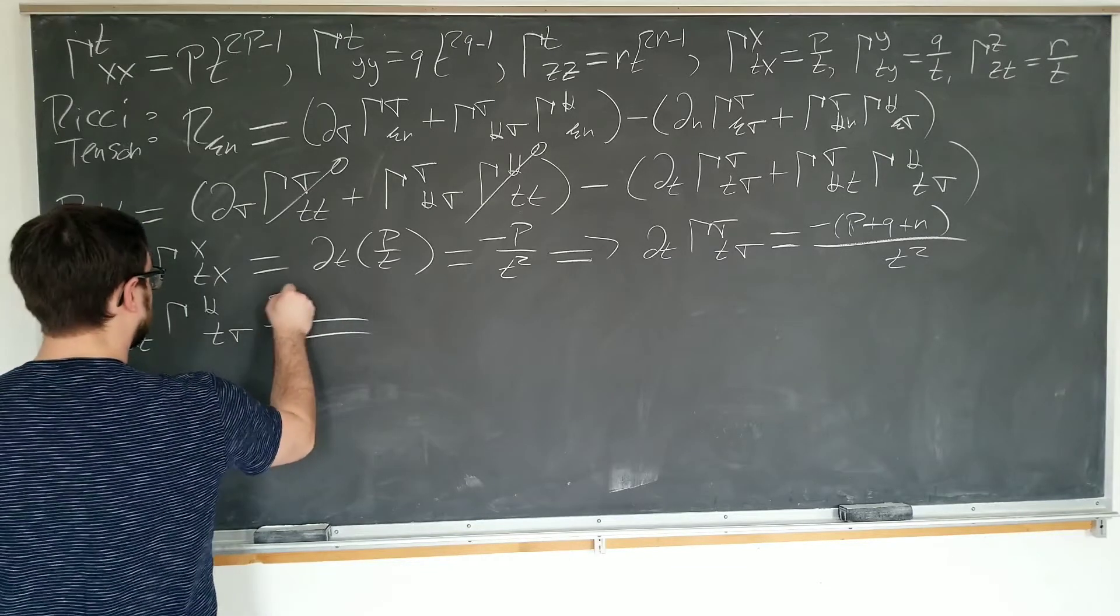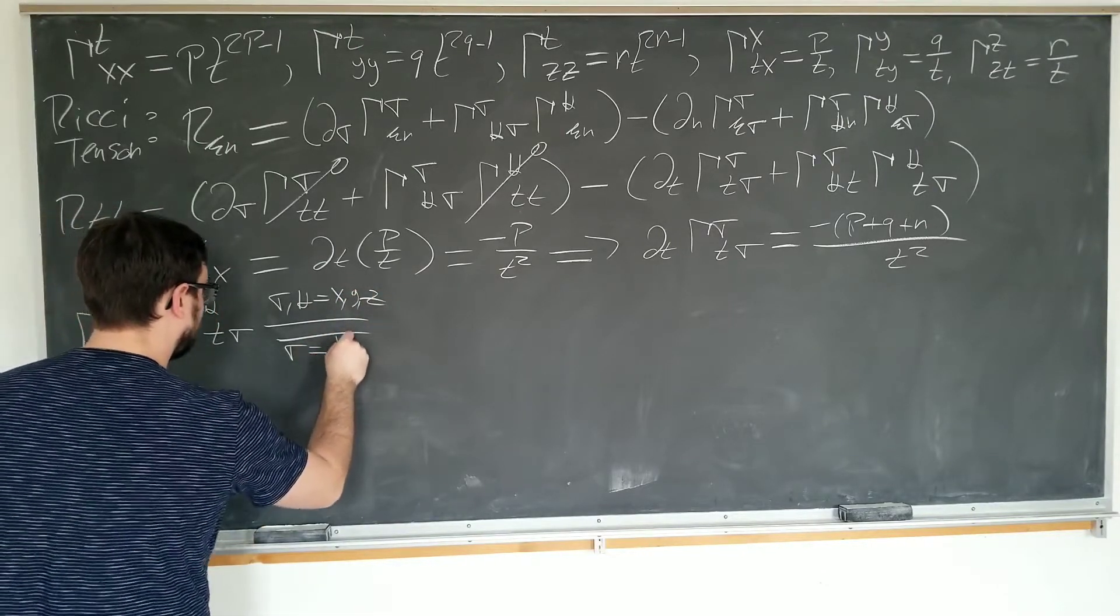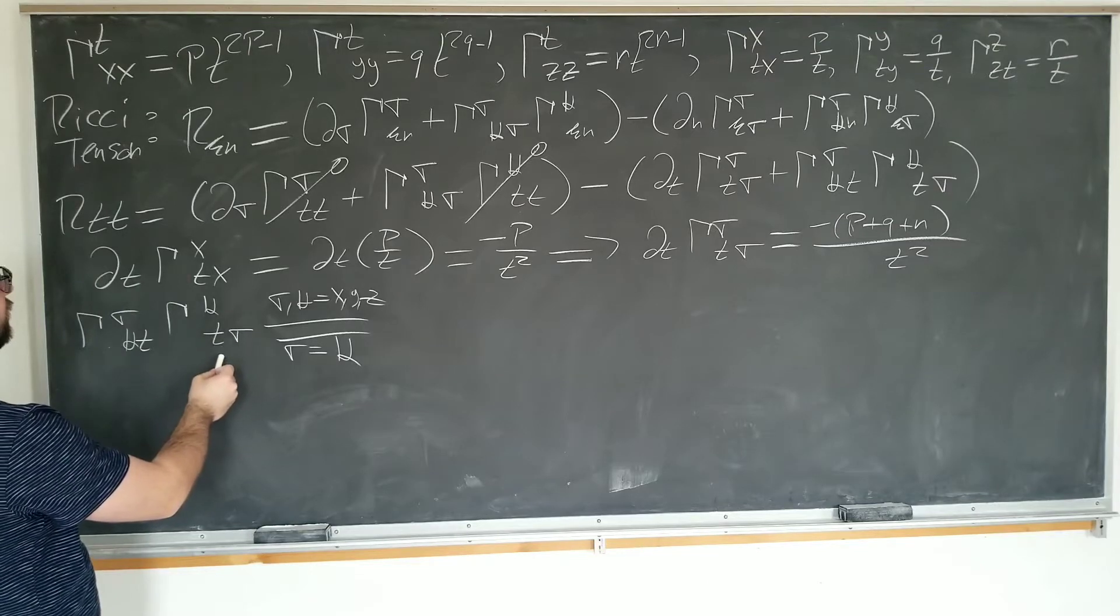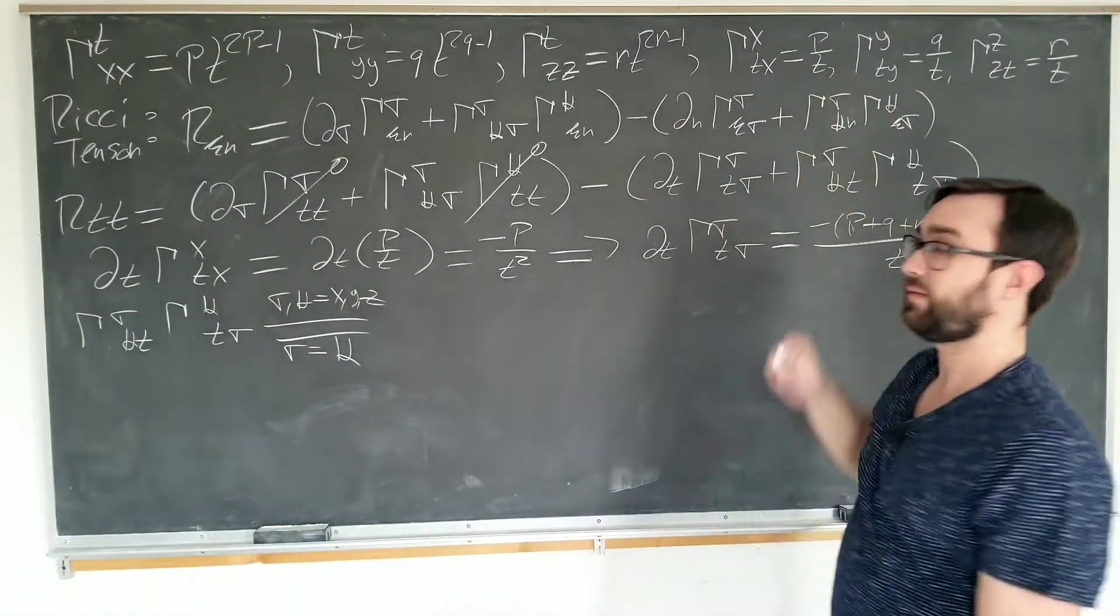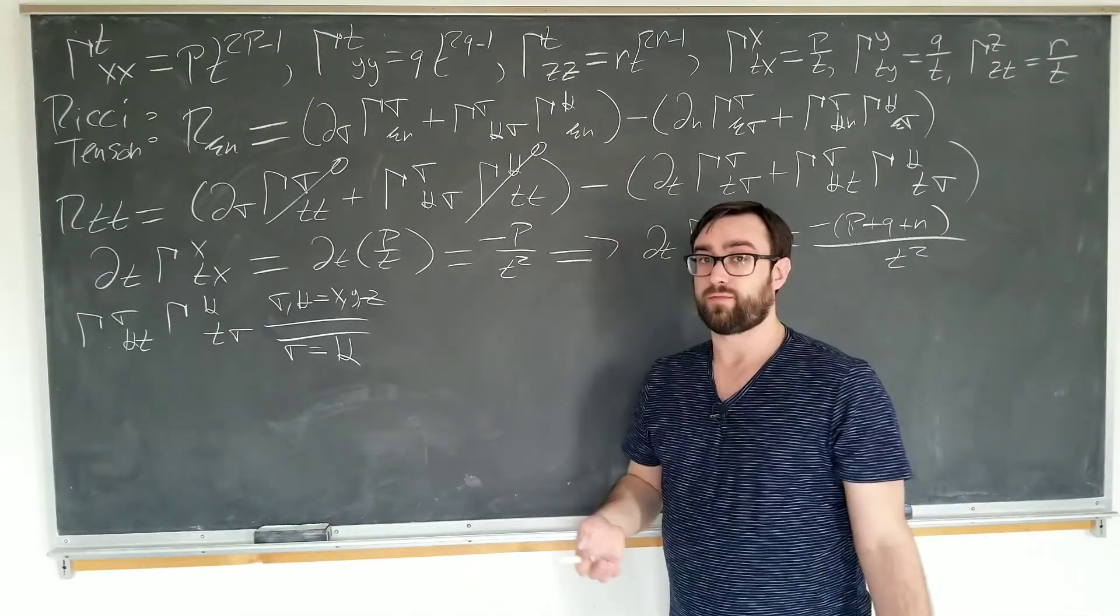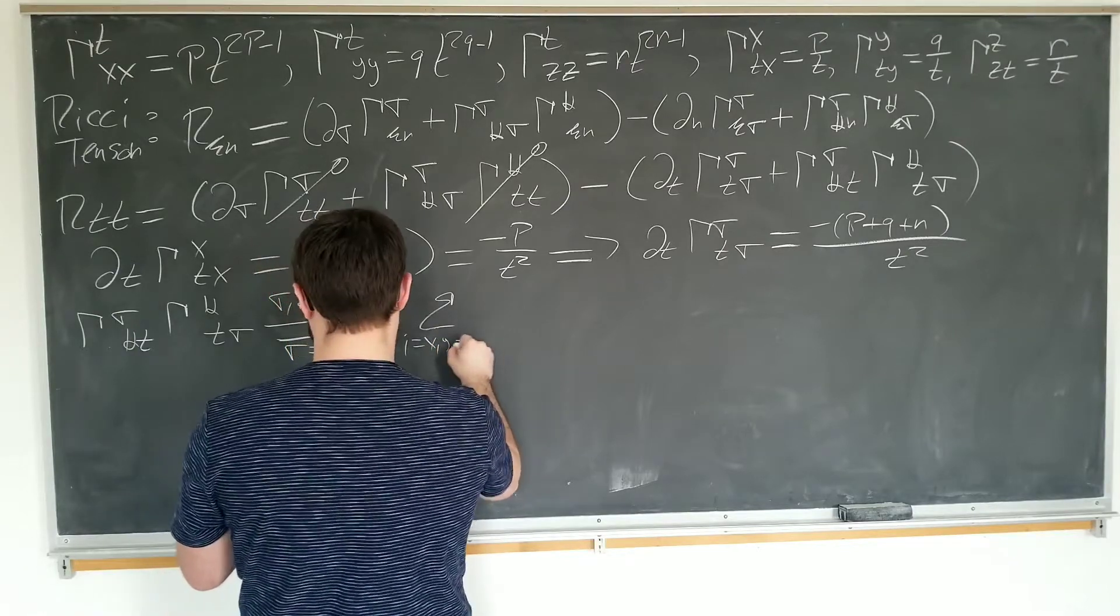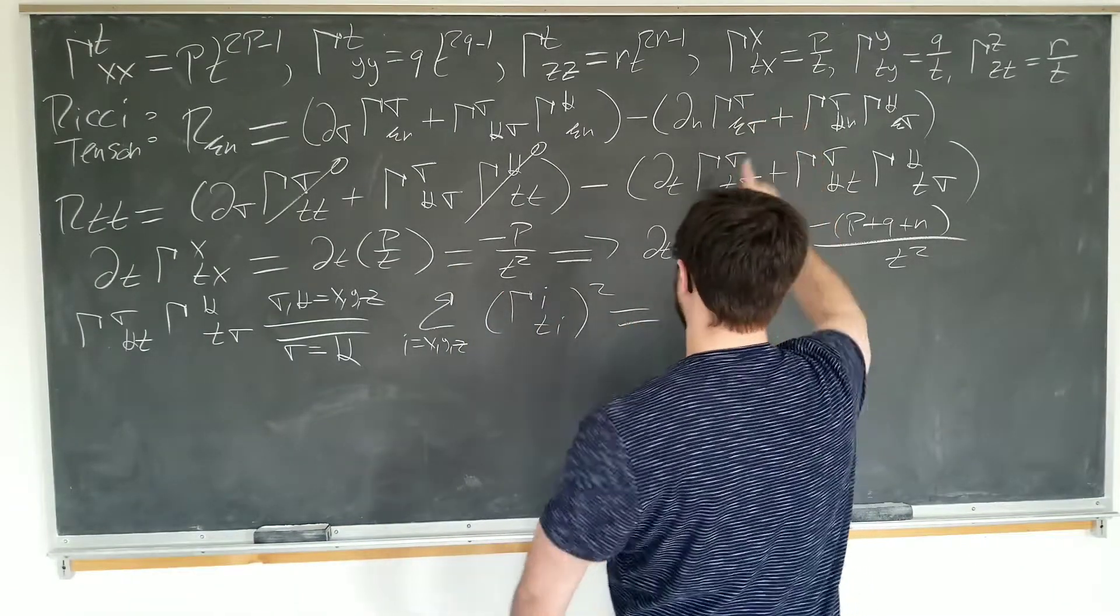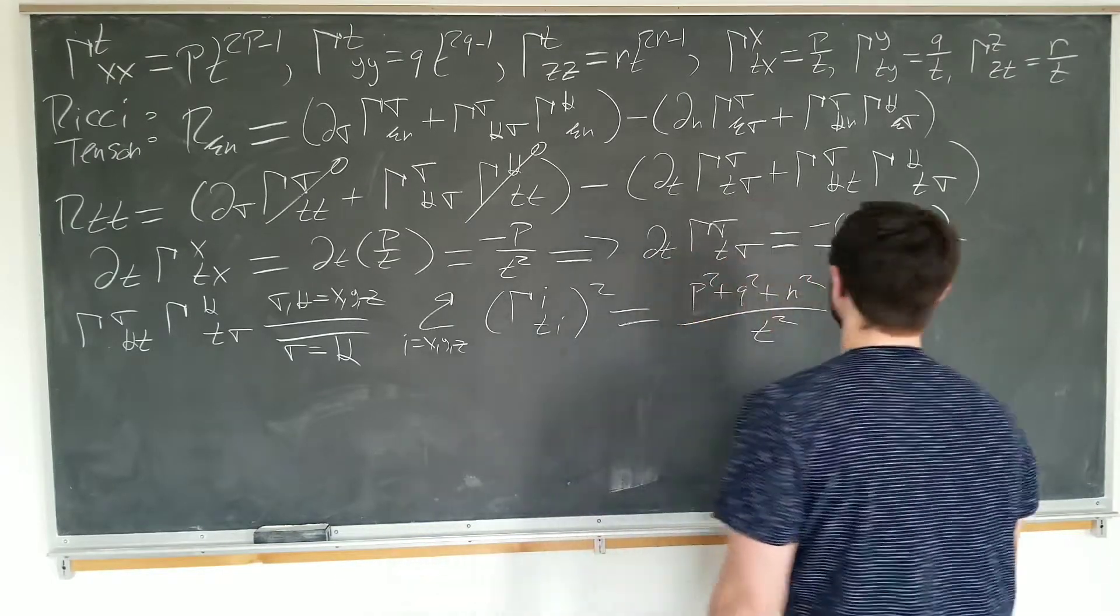We know that sigma and kappa must be equal to x, y, and z. No t. And sigma has to actually be equal to kappa for this to be non-zero. So what we are saying is we want to look at the squares. Sigma is equal to kappa. Squares of these bad boys here that we were just considering. Yes, this logic is a bit subtle, so it's important to go through it for yourself if you have any questions. So this is actually equal to the sum as i ranges from x, y, and z of gamma of i_t_i squared, which we have up there, basically, as just P squared plus Q squared plus R squared over T squared.